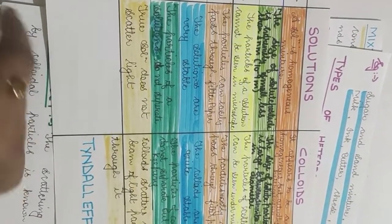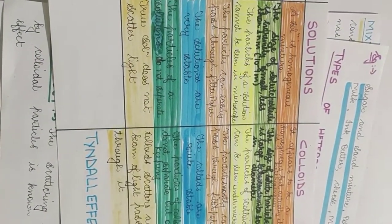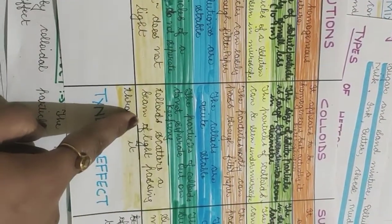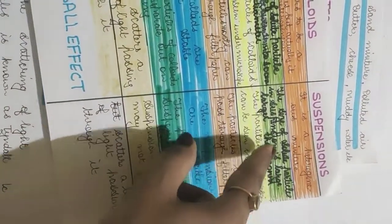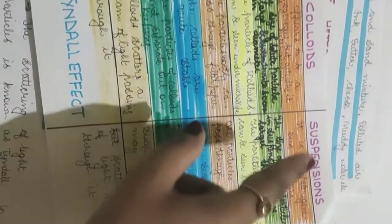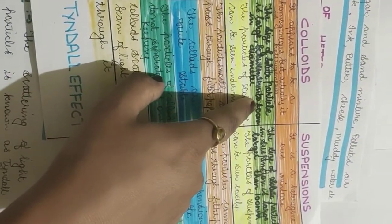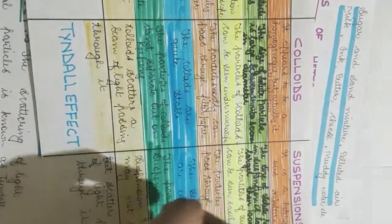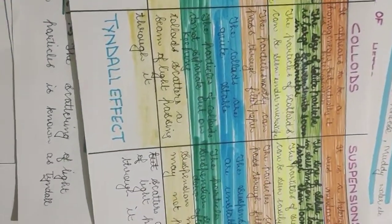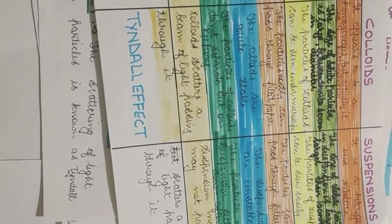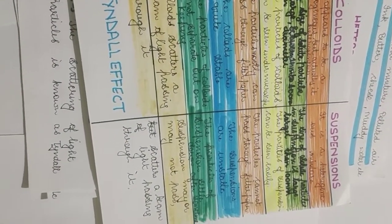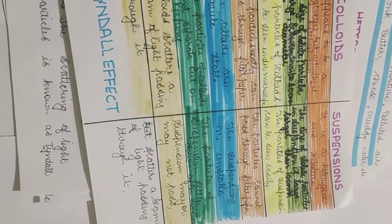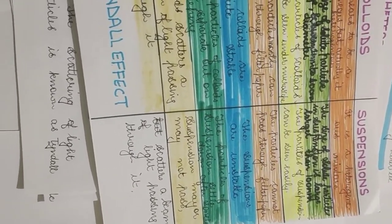The last point: true solutions do not scatter light — that means they do not show Tyndall effect. Colloids show Tyndall effect — they scatter a beam of light passing through them. For suspensions, since the size is larger than 100 nanometer, but if it is around 200 nanometer — nearer to the colloidal size — sometimes it may scatter a beam of light. So we cannot say completely no. But if the particles are bigger than that, they will not scatter the beam of light, and they are called suspensions.